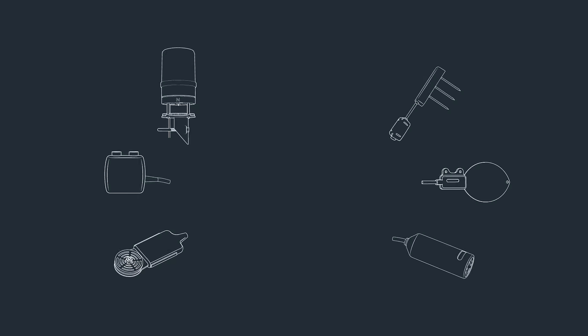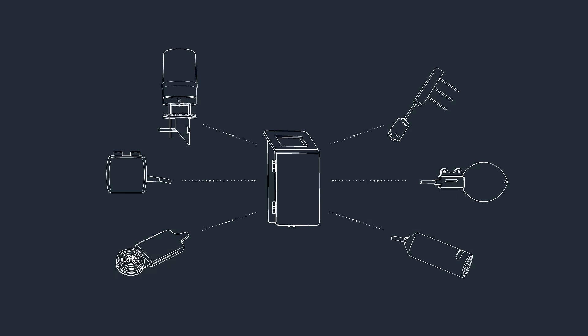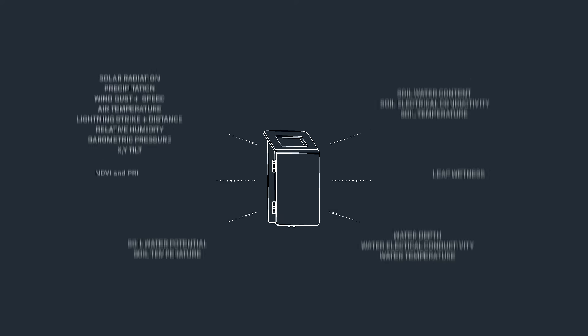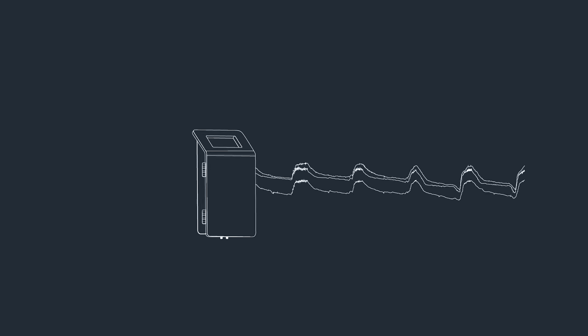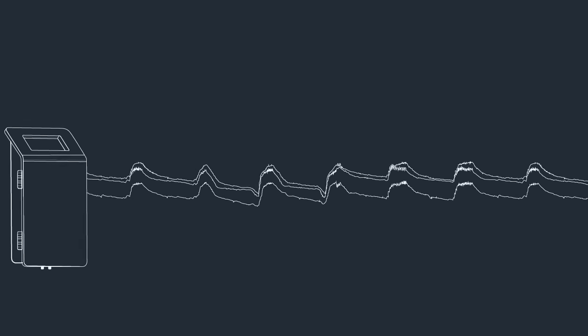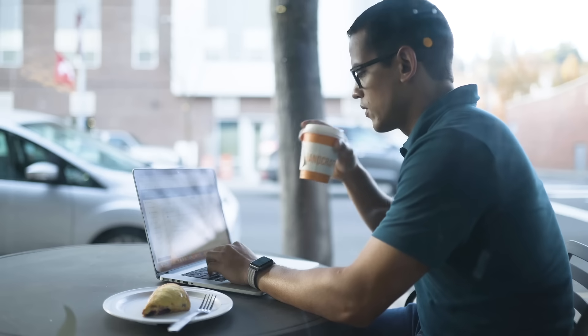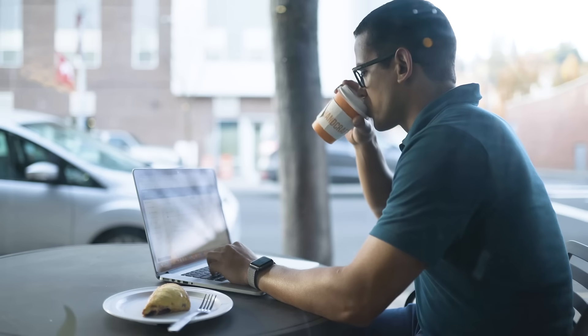Using meter multi-parameter sensors, you can look at dozens of measurements per data logger. With Zentra Cloud, you can quickly see how data are trending, check your system integrity, and evaluate what's happening at your site, from the comfort of your own office or anywhere in the world.